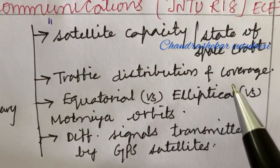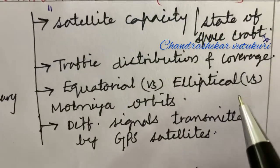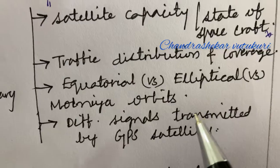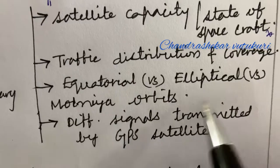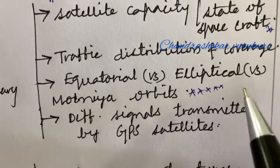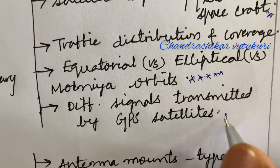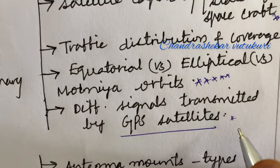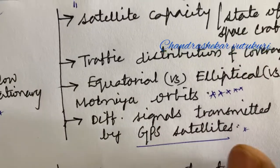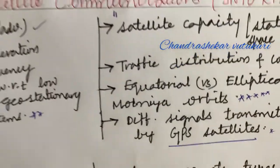Satellite capacity and state of spacecraft — explain the terms traffic distribution and coverage. Equatorial versus elliptical versus polar orbit, which is set to be one of the important questions where differences will be asked. Different signals transmitted by GPS satellites — as related to GPS satellites you will be getting one question for sure. Do not expect direct marks; expect a combination of 5-5 split.